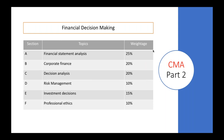Let's have a glance at the topics discussed in the old syllabus. The old title was Financial Decision Making, which had six sections: Financial Statement Analysis, Corporate Finance, Decision Analysis, Risk Management, Investment Decisions, and Professional Ethics. The weightages given by the IMA were 25%, 20%, 20%, 20%, 10%, 15%, and 10% respectively.